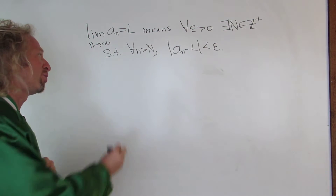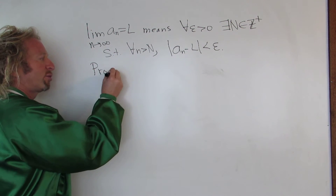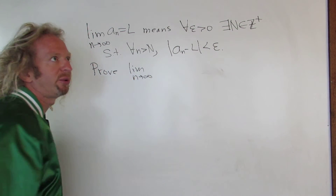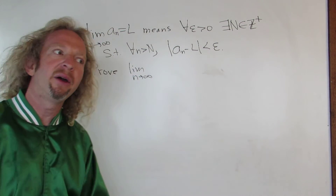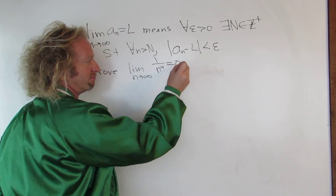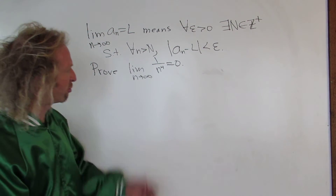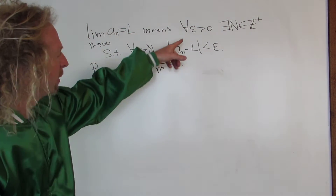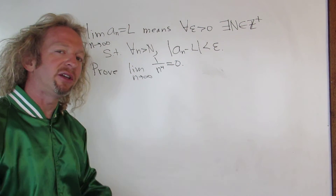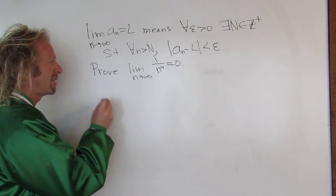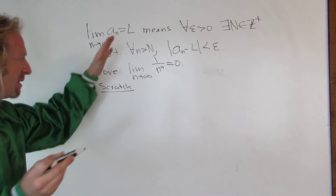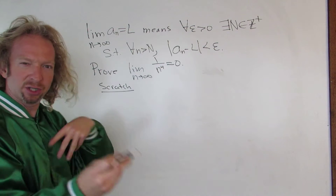Let's do a simple proof. Let's prove — let's do one over n to the fourth. I'm just making one up. Let's prove that that limit is equal to zero. So before we do the proof, you have to figure it out. In the proof we have to start with epsilon greater than zero and we have to find N. That's typically the hard part. So first, let's find N — this is scratch work. We're just going to use the definition and kind of work backwards.